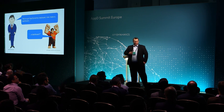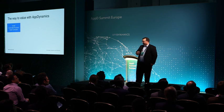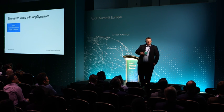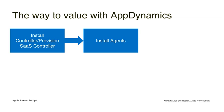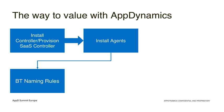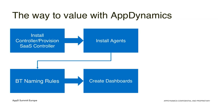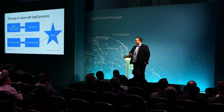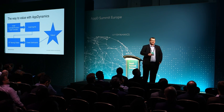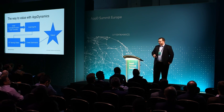So I go back to Matt and I asked him what he wanted. He said, the way you get value out of AppDynamics is you start by installing a controller or provisioning a SaaS controller, then you install some agents, then you do some BT naming rules, you create a dashboard, and boom — now you've got value. It's a key step in creating value with AppDynamics. You cannot create value without a dashboard.